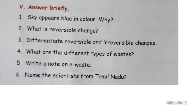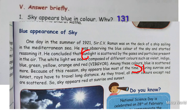Next, answer briefly. Number one question: Sky appears blue in colour — why? Take page number 131. Sunlight is scattered by the gases and particles present in the air. The white light we see is composed of different colours such as Violet, Indigo, Blue, Green, Yellow, Orange and Red. Among these colours, blue is scattered more, and because of this reason, the sky appears blue most of the time.